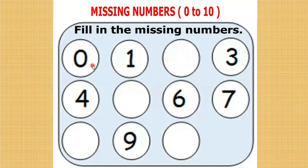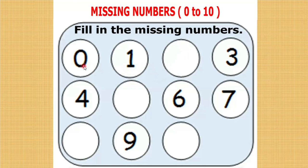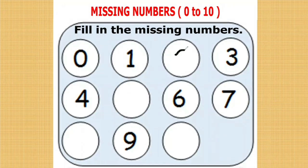Here the first number is 0. After 0, 1 is there. After 1, the number is missing. What comes after 1? To do this, you have to keep 1 in your mind and do the forward counting from 0. 0, 1, 2. What comes after 1? 2. Let us write 2.